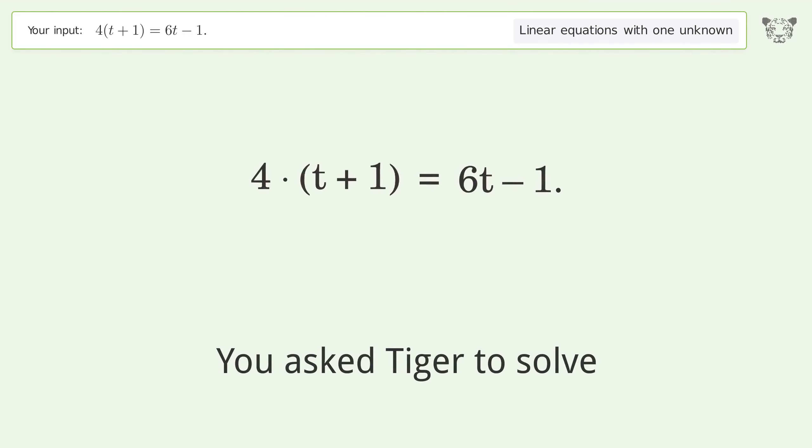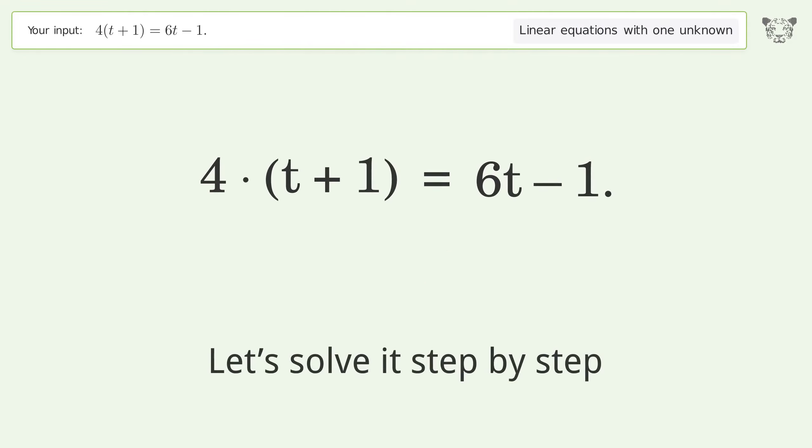You ask Tiger to solve this. This deals with linear equations with one unknown. The final result is t equals 5 over 2. Let's solve it step by step. Simplify the expression, expand the parentheses.